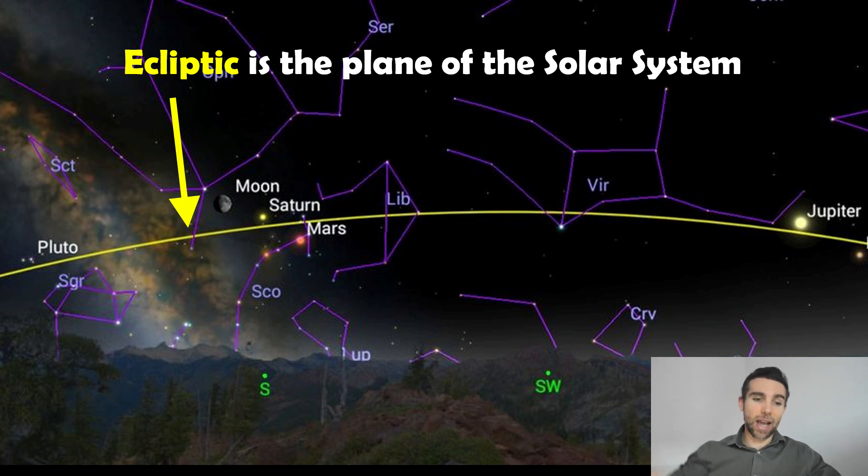Pluto is obviously a bit out of that because it's quite inclined, but the rest of the planets are fairly close to the plane of the solar system. And they'll appear to move along this ecliptic in the sky.